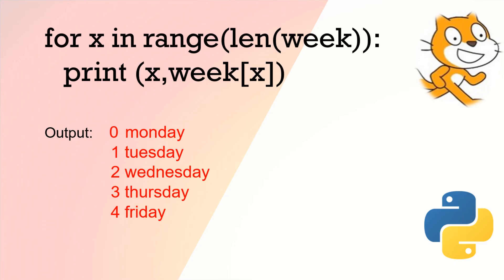So let's review what we've just seen. We've got range of the length of 'week', so if that's five items it goes 0, 1, 2, 3, 4. We can print x which is 0, 1, 2, 3, 4 and then the item in the list called 'week' at that place. So week[0] is Monday, week[1] is Tuesday, week[2] is Wednesday, week[3] is Thursday, week[4] is Friday. That might be quite difficult to grasp straight away, so you might need to watch some parts of the video a few times. Because the list starts at zero it makes it a little bit more difficult and different from Scratch, but the things we did in Scratch we are now doing in Python.